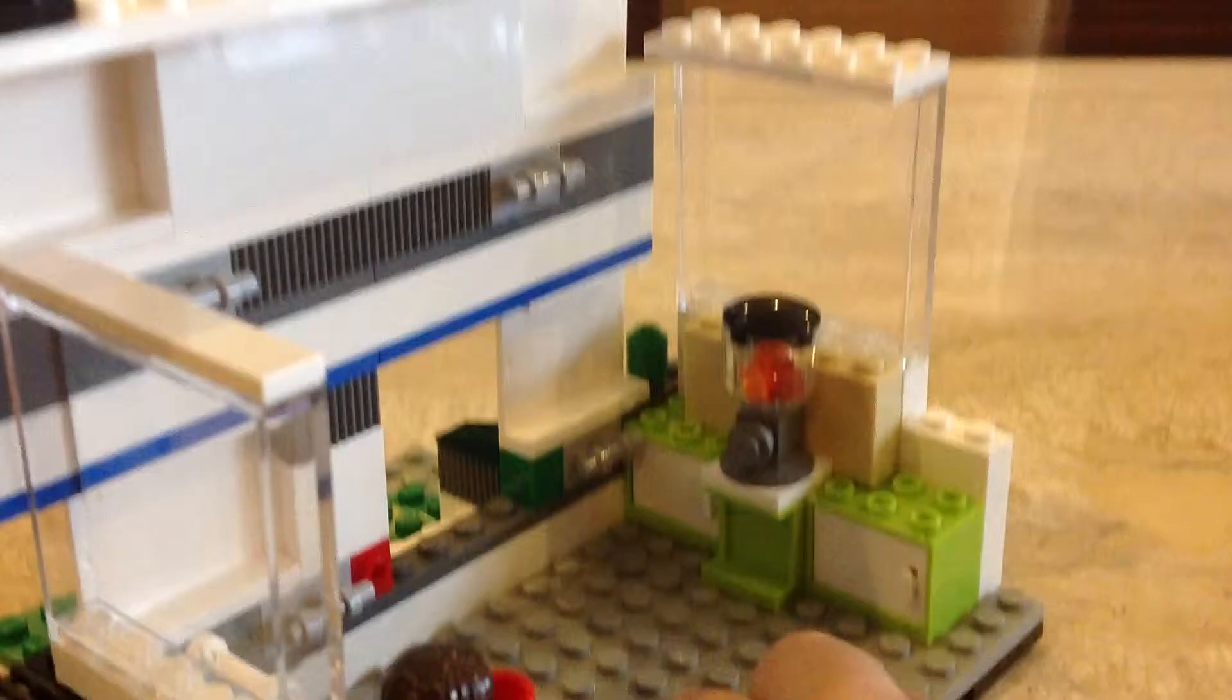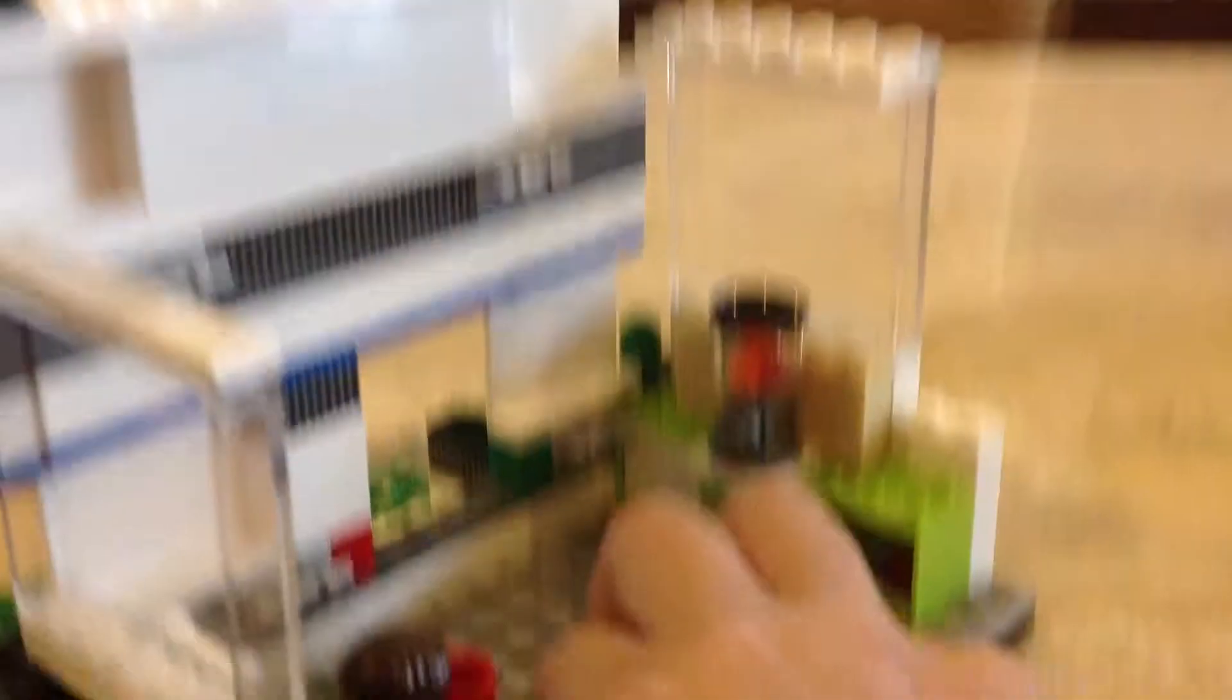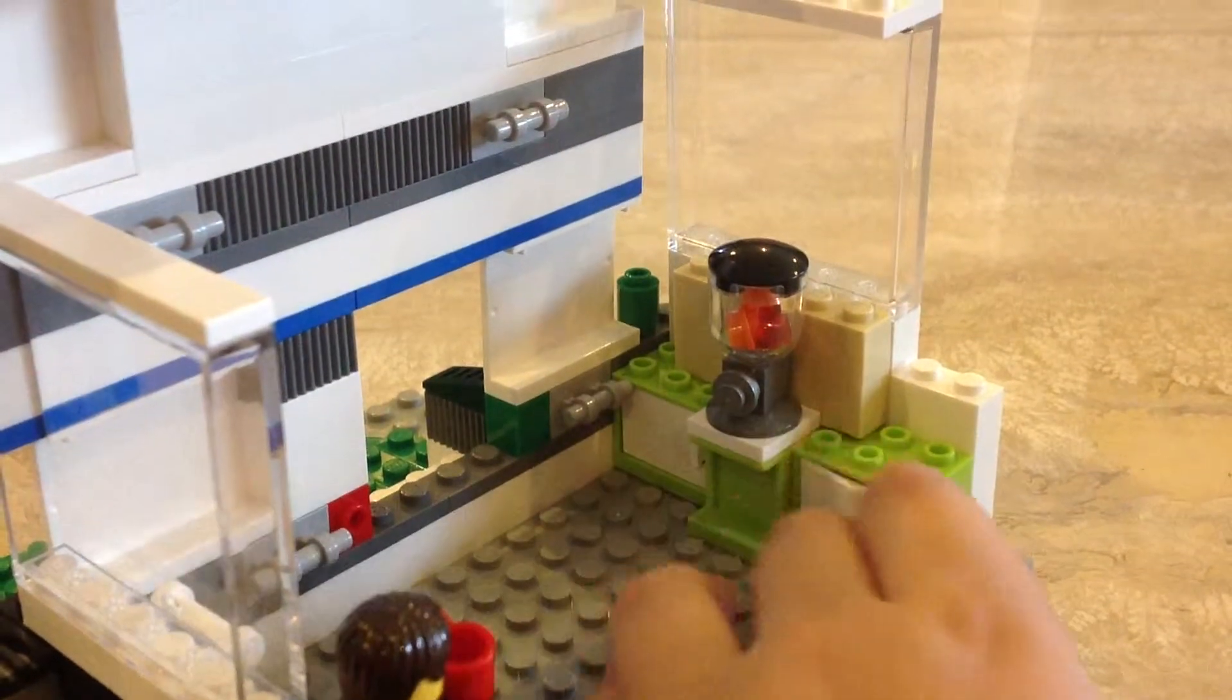This kitchen is all from the Malibu Mansion. I just took some off and then use these pieces. Put the things in the cabinet.